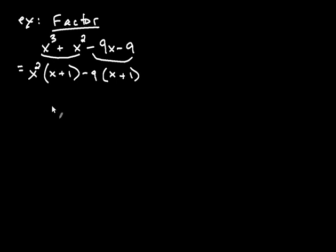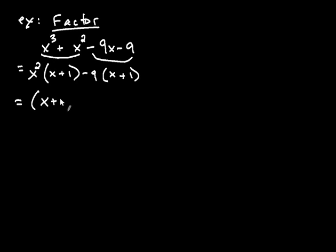Factoring by grouping works when the two products share a common factor. Here's the first product and here's the second product, and what they have in common is the factor of x plus one. So I'm going to factor that out of both of them — it shows up on the outside. Once x plus one is removed from the first product, what's left is x squared. And once x plus one is removed from the second product, what's left is negative nine.